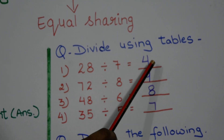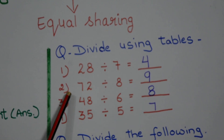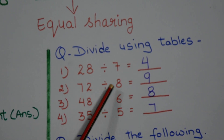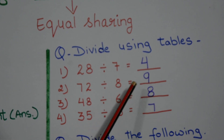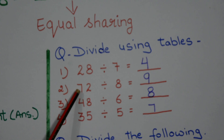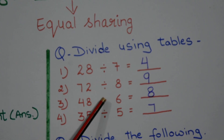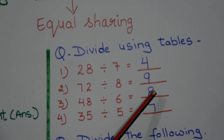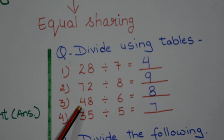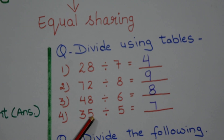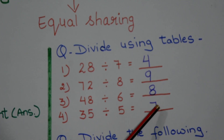You all know that 7 fours are 28. Next, question 2 is 72 divided by 8, equal to 9 — because 8 nines are 72. Third question is 48 divided by 6, equal to 8 — because 6 eights are 48. Fourth question is 35 divided by 5 — because 5 sevens are 35.